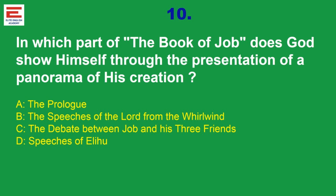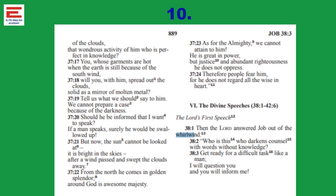Question 10: In which part of the Book of Job does God show himself through the presentation of a panorama of his creation? The prologue — definitely no. Normally God expresses himself in the Bible through lightning, fire, and wind. Here it is only through the whirlwind. The debate between Job and his three friends — not possible. Speeches of Elihu — also not possible. God manifests himself to Job through the whirlwind. The textual line in Book of Job, Chapter 38, line 1 reads: 'Then the Lord answered Job out of the whirlwind.'